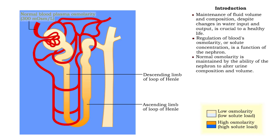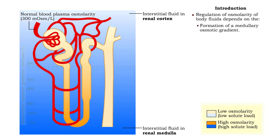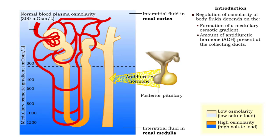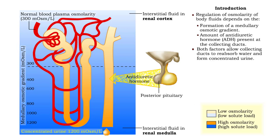Normal osmolarity of body fluids is maintained by the ability of the nephron to alter urine composition and volume. Regulation of osmolarity of body fluids depends on both the formation of a medullary osmotic gradient and the amount of antidiuretic hormone present at the collecting ducts. These two factors allow the collecting ducts to reabsorb water and form concentrated urine.